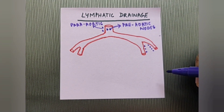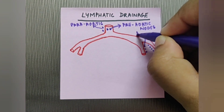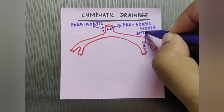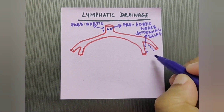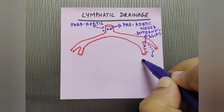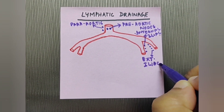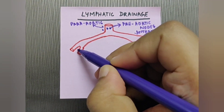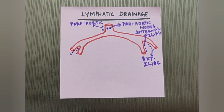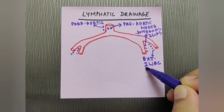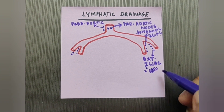Here we have the internal iliac and the external iliac lymph nodes — I'm marking the internal iliac lymph nodes here, and these are the external iliac lymph nodes, drawn on both sides. Then here we have the obturator lymph nodes.